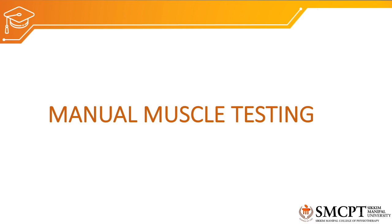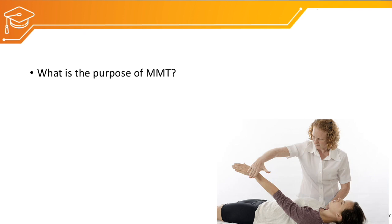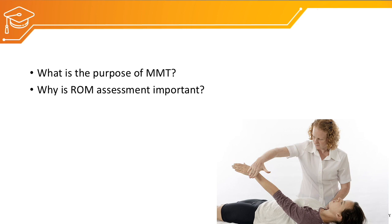In the previous class, we discussed manual muscle testing (MMT) and importantly the grading system. We covered the purpose of MMT — to find out muscle strength — and various indications for performing MMT, which were mainly central nervous system damage and peripheral nerve injury, which can cause weakness of the muscles.